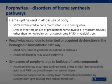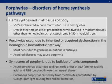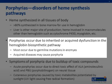Most heme synthesis occurs in the bone marrow, but the liver is another major site of production. Errors in heme synthesis in the liver account for overproduction of metabolites which cause acute intermittent porphyria. The majority of these disorders occur because of germline mutations in the enzymatic processes of heme synthesis, although some cases, such as porphyria cutanea tarda, can be acquired.